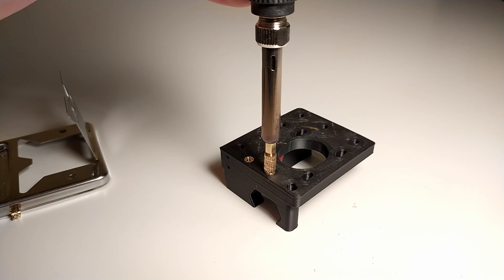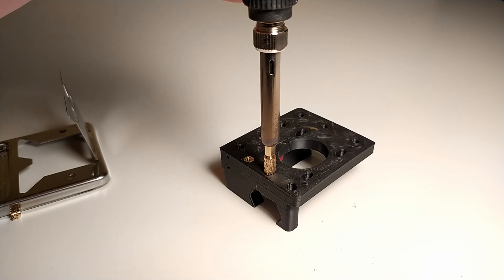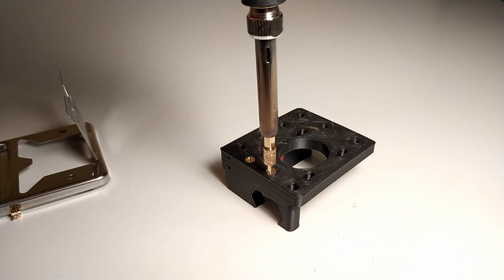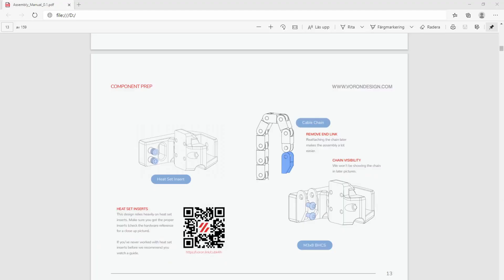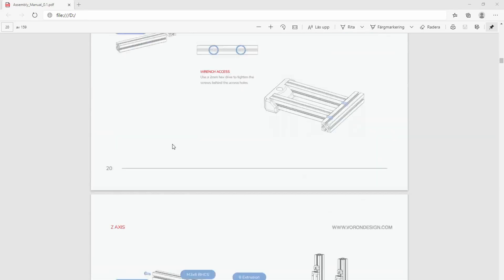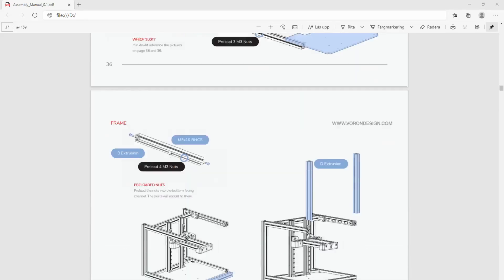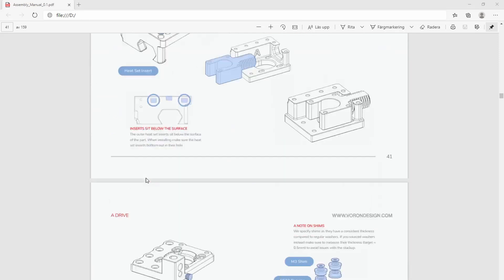Now for a small tip for actually building Vorons, other printers, or other projects that use a lot of heat set inserts, it's really helpful to go through the actual manual, look at all the parts that need heat sets, and then install them before you actually start with the build.